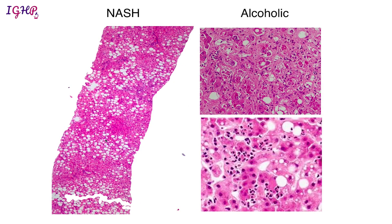This case of non-alcoholic steatohepatitis shows macrovesicular steatosis of moderate degree with some lobular inflammation. In alcoholic hepatitis, you can see numerous Mallory bodies accompanied by a fair number of polymorphs. In the lower panel, neutrophilic satellitosis is visible — clusters of polymorphs seen in the vicinity of hepatocytes. This occurs because lipopolysaccharides absorbed through the gut in alcoholic patients are expressed on the surface of hepatocytes and act as chemotactic signals for polymorphs.